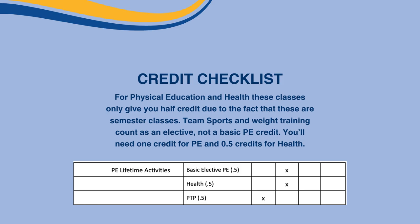For physical education and health, these classes only give you half a credit due to the fact that these are semester classes. Team sports and weight training count as an elective, not a basic PE credit. You'll need one credit for PE and half a credit for health.